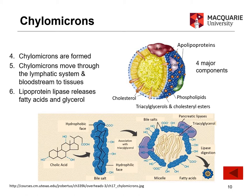As chylomicrons move through our system, they react with an enzyme called lipoprotein lipase, which releases some fatty acids and glycerol from the chylomicron at that site. This is important because some tissues rely on fat breakdown for energy — for example, the heart prefers fatty acid breakdown to produce energy rather than glucose, which is different from the brain, which prefers glucose as its major metabolic fuel.